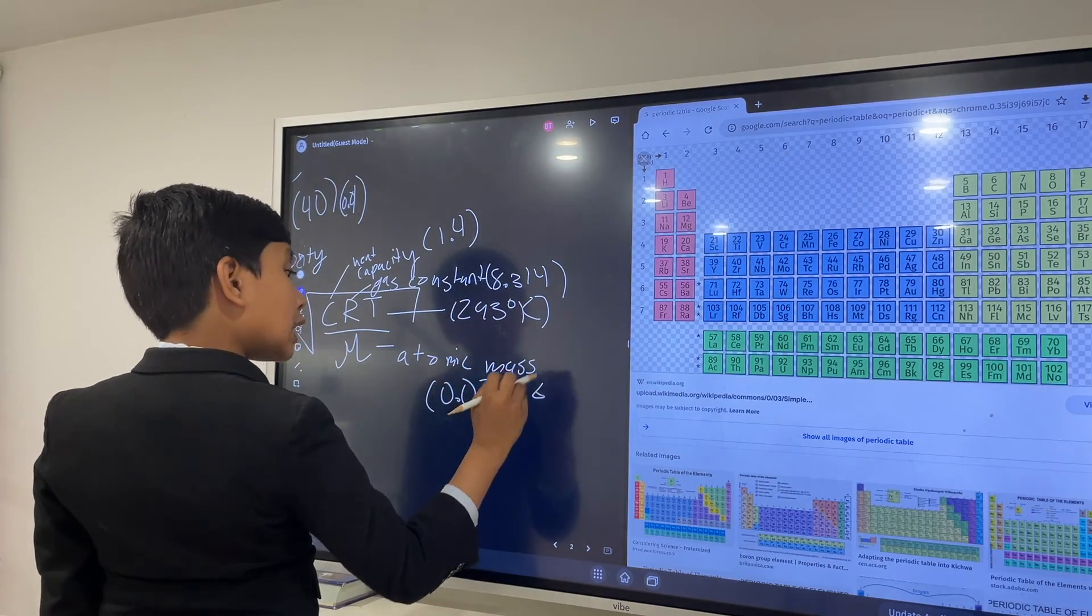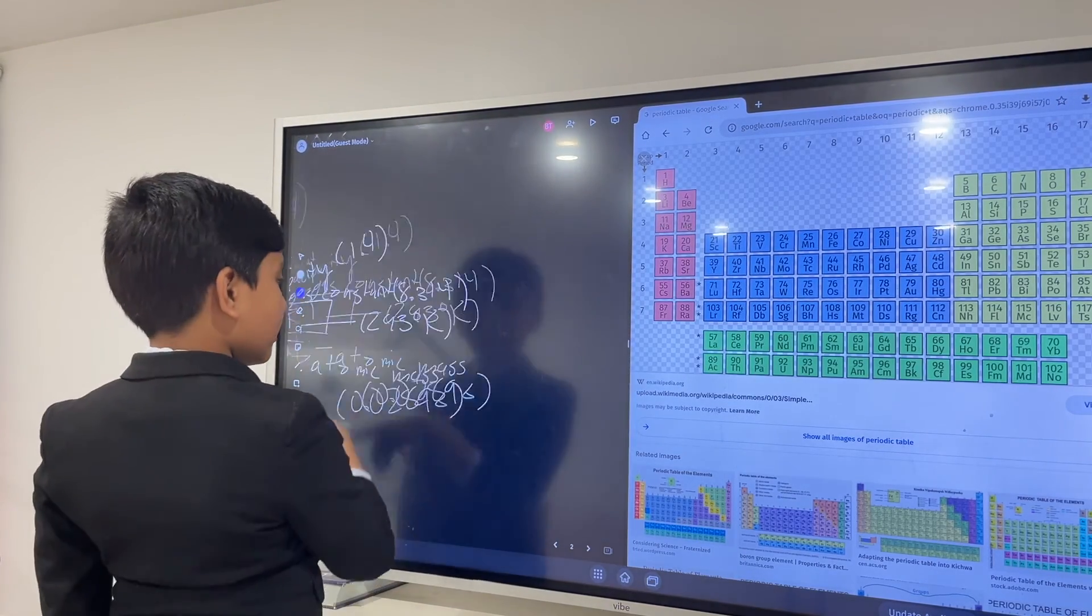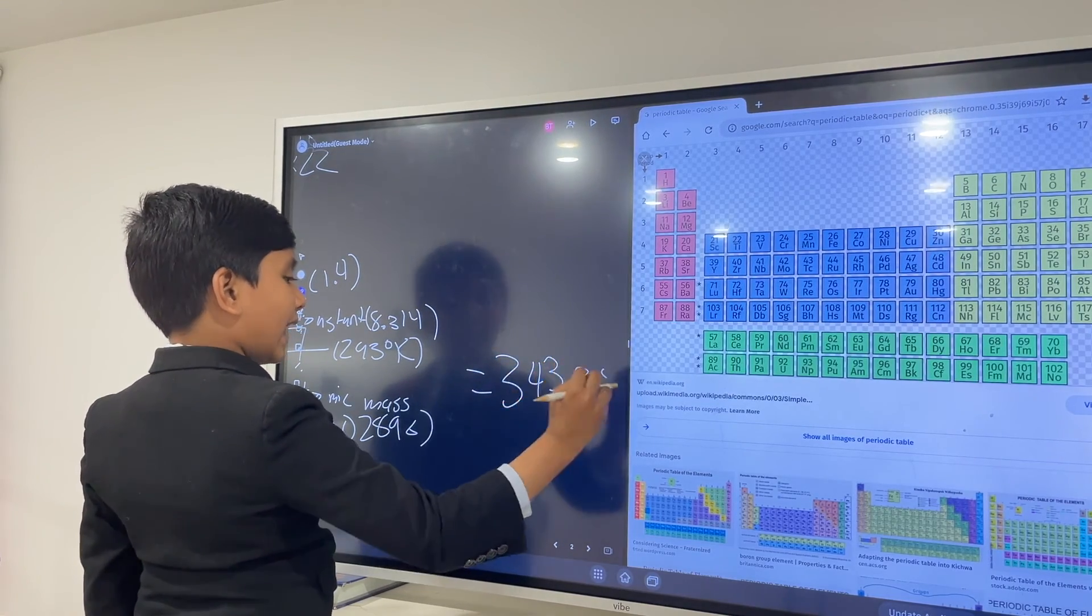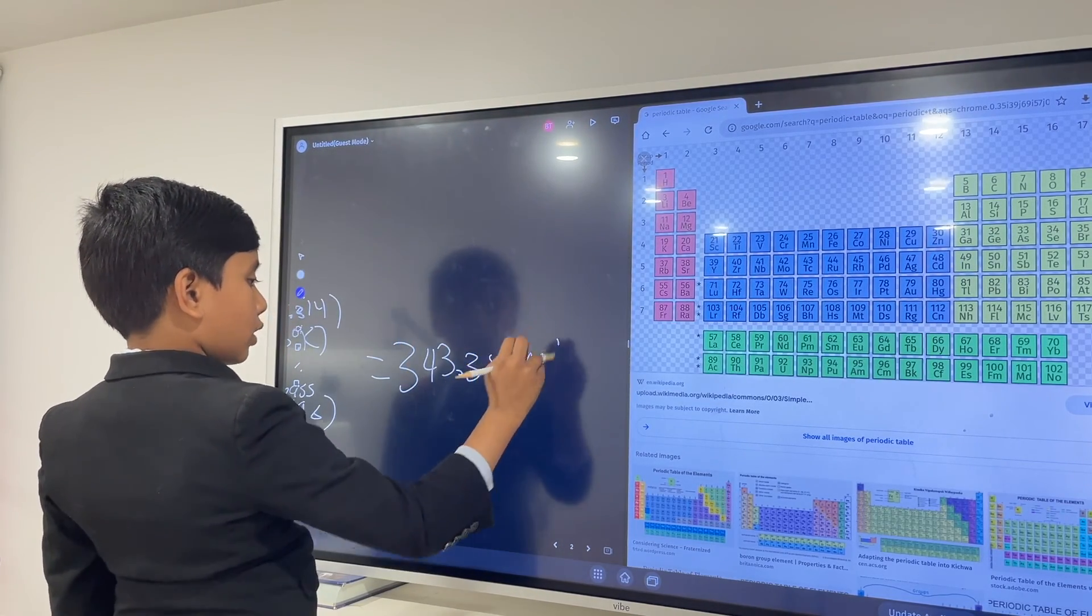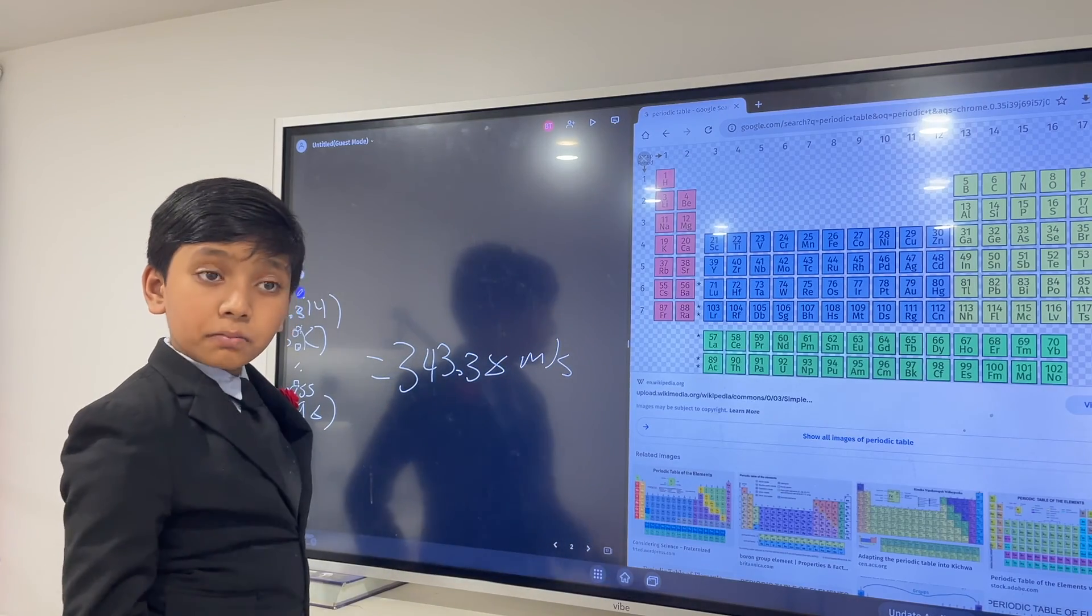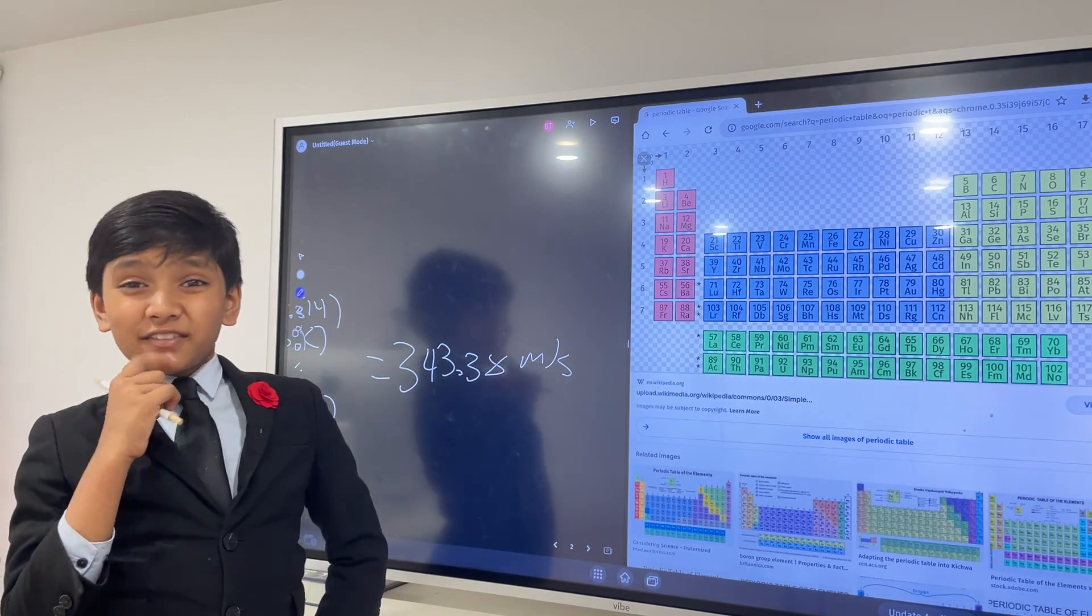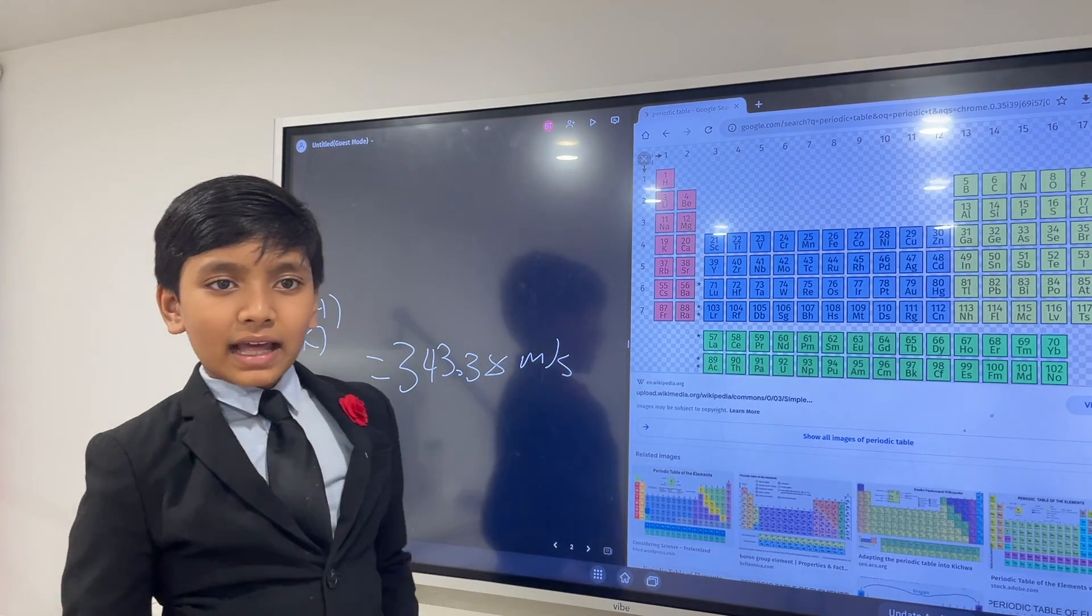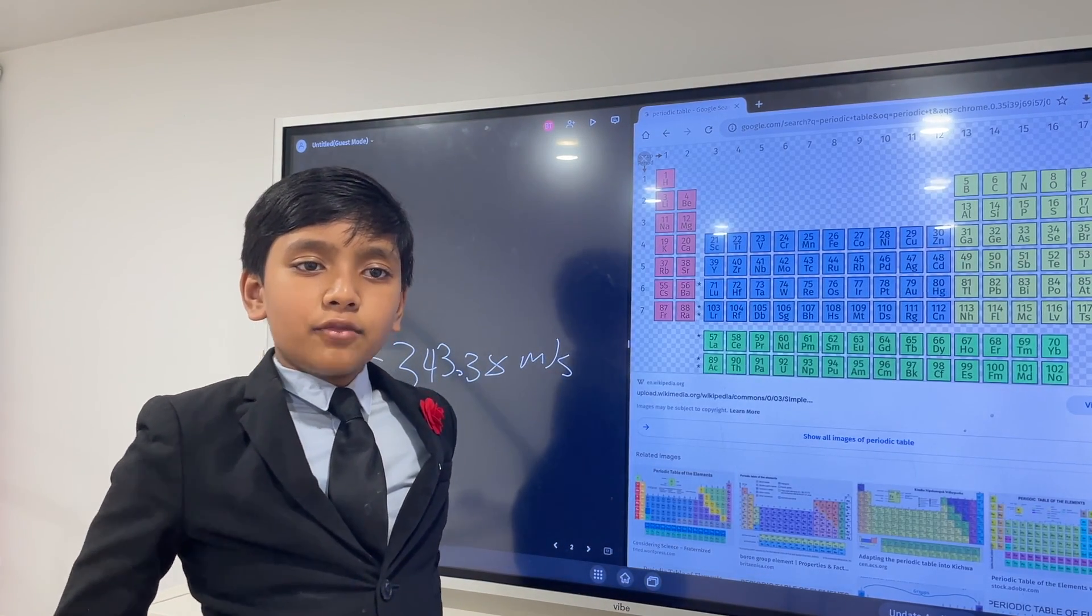So 0.02896. Now let's plug that into our equation. If you plug all things in, you should get 343.38 meters per second. Hmm, looks kind of like a familiar number. That's how to calculate the speed of sound. Thank you for watching.